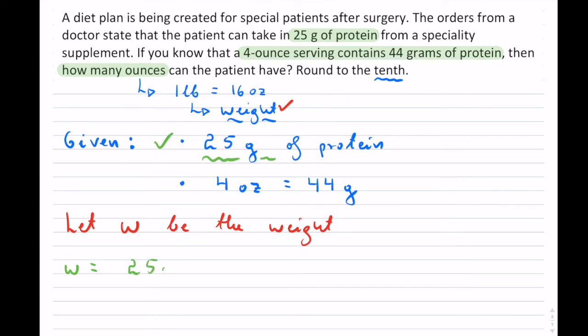So we want to have 25 grams of protein, and now we're going to be multiplying. We want to get the weight in ounces, right? So we want this weight in ounces as they have told us, so how many ounces.